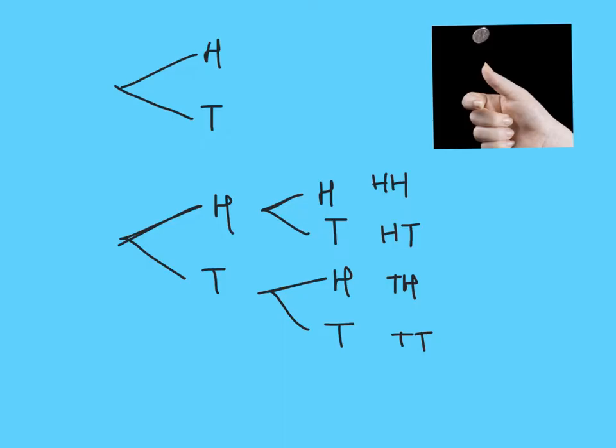If success is getting a head, then only one of these outcomes has no success at all, one has success once and failure once, and one has success twice. I could do this with 3 coins, 4 coins, 5 coins, etc. With binomial, I'd have a fixed number of trials — for example, flip the coin 5 times, 100 times, or 1,000 times, but a fixed number.